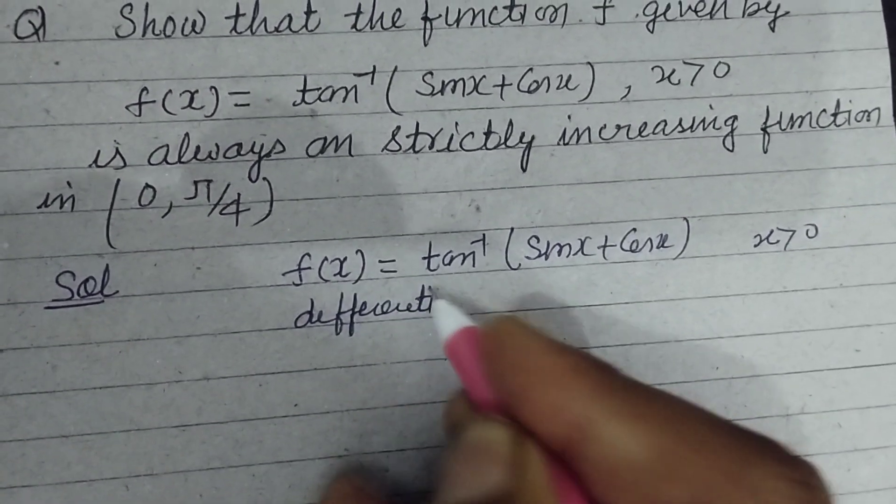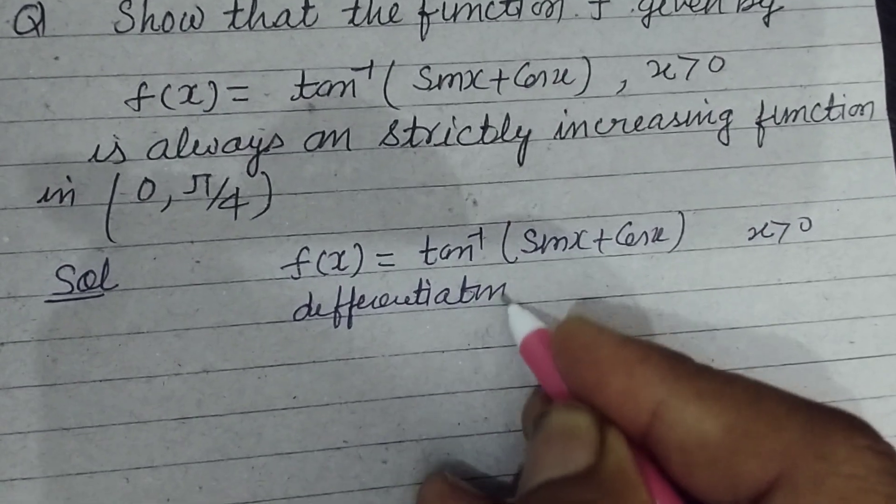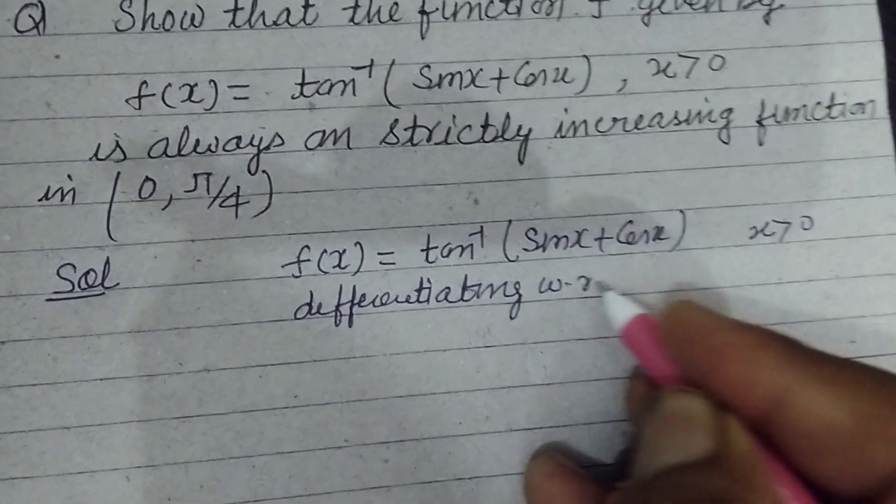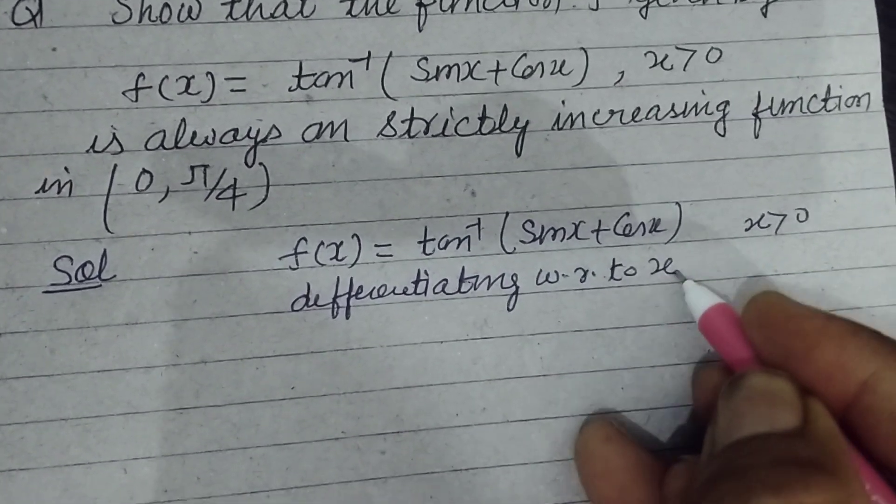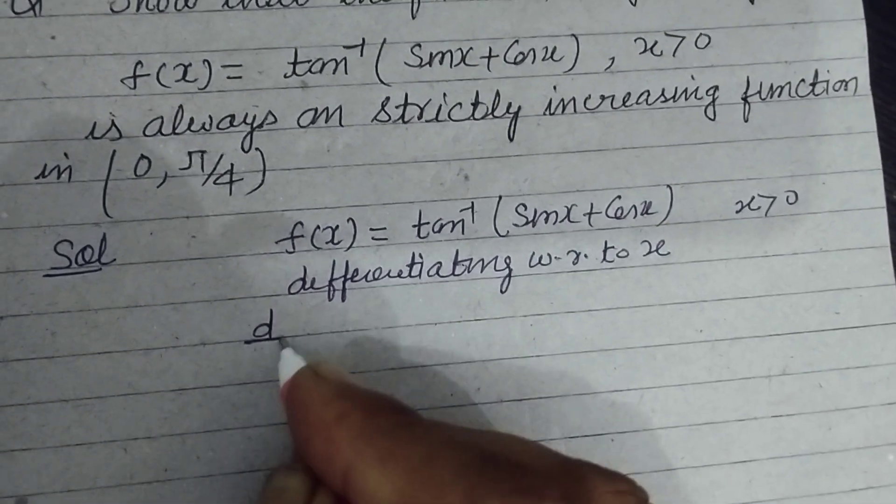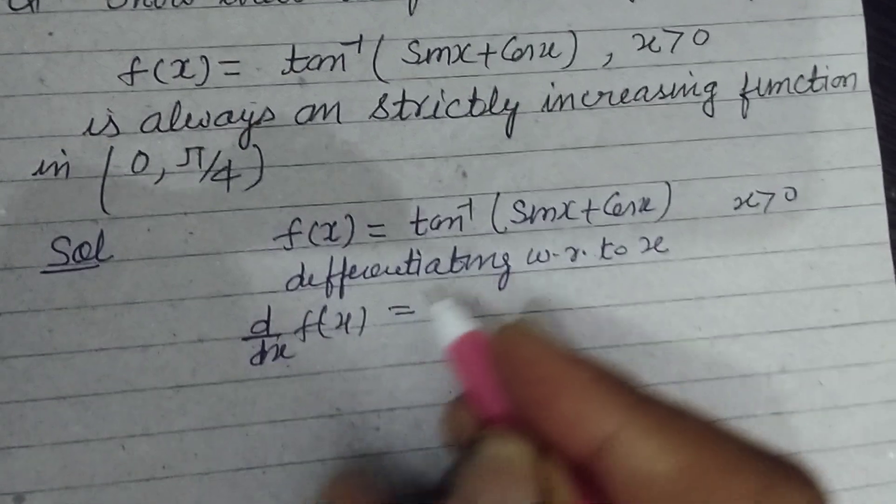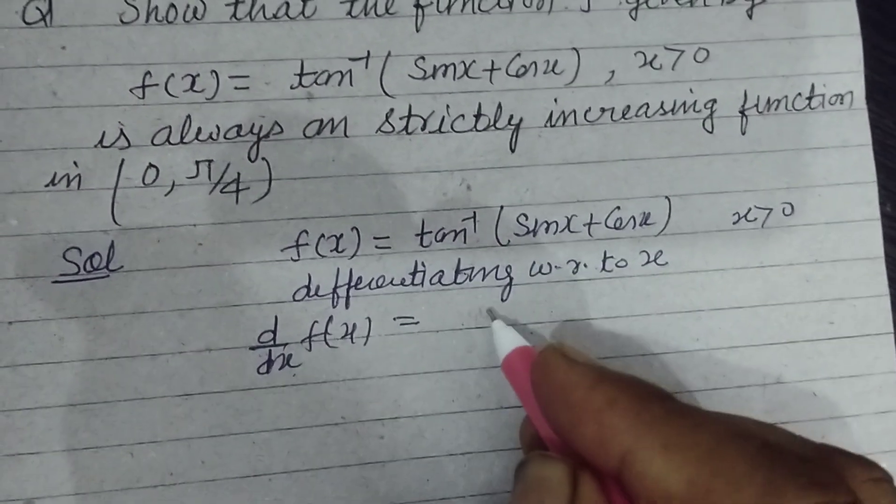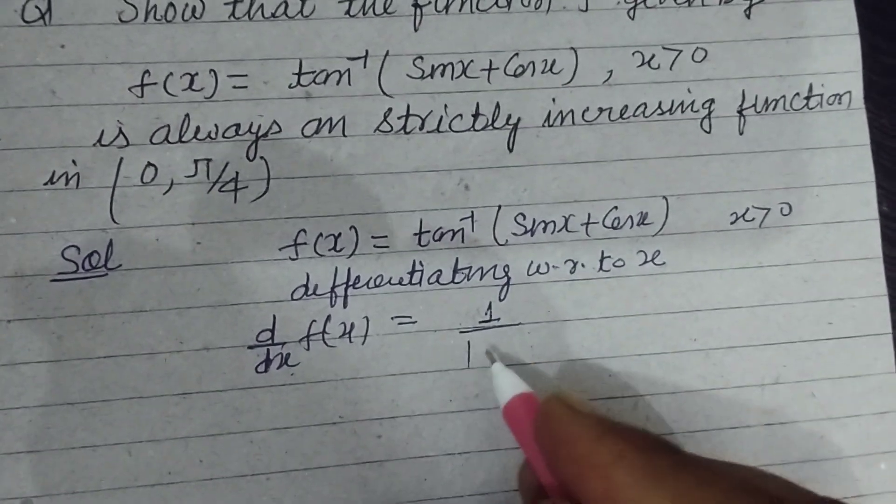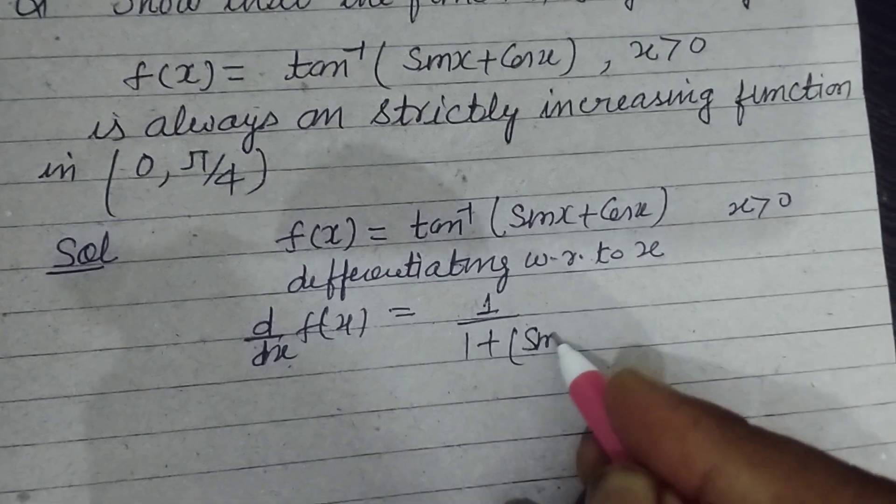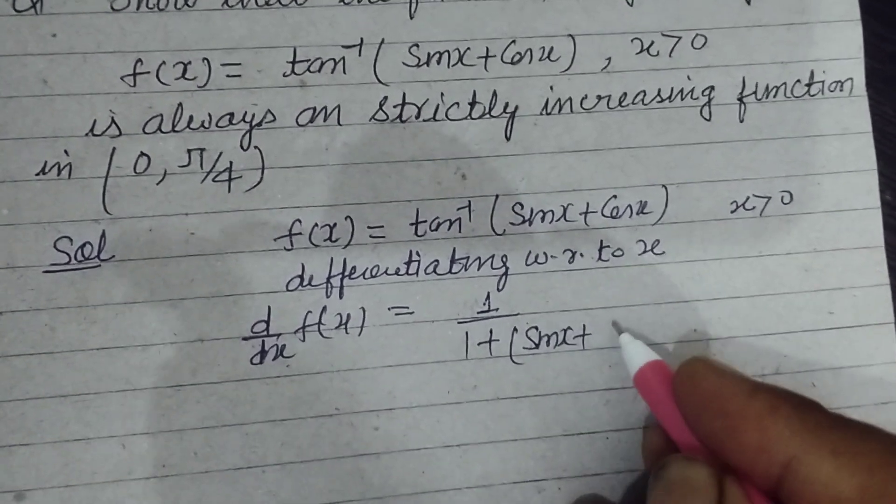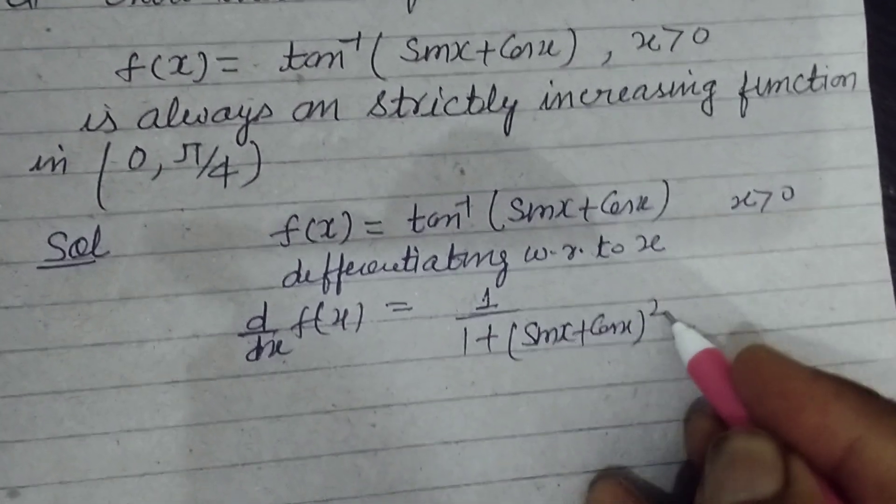Differentiating with respect to x: d/dx f(x) = 1/(1 + (sin x + cos x)²), where x is sin x + cos x whole square.